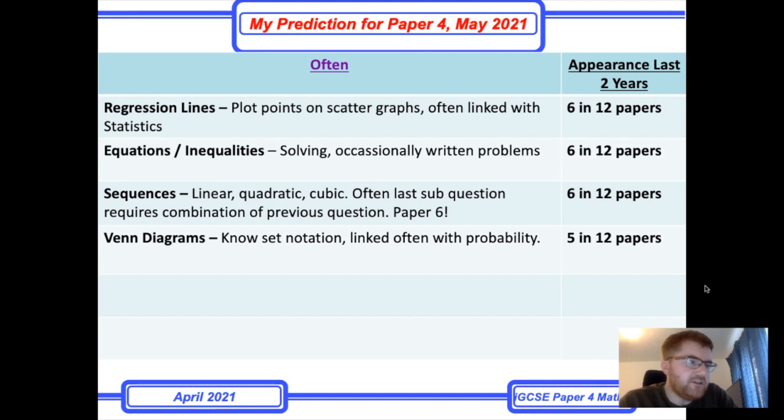Equations inequalities. What's interesting is I would say there's an equal chance of it coming up on paper two or paper four. It's really one of those topics they could put on either. So if it doesn't come up on paper two, for example, you can be pretty sure it's going to come up on paper four. When you do your paper two, there's only a couple of days in between. Really note down those topics that have appeared, and then they're less likely to appear on the next paper. Occasionally, they're written problems where they'll write it out in written format and you'll need to find the simultaneous equation, for example.